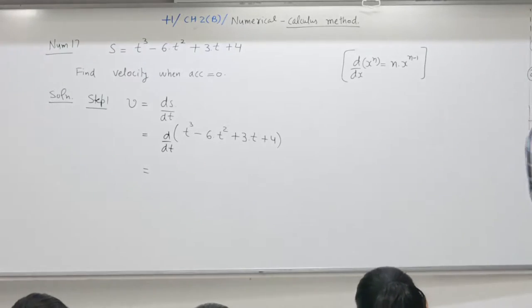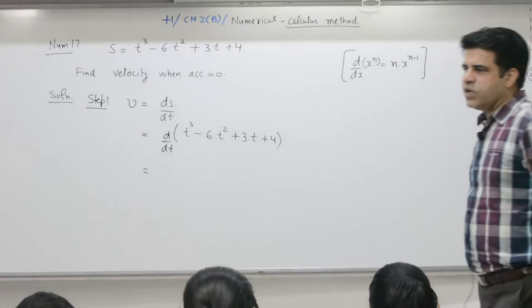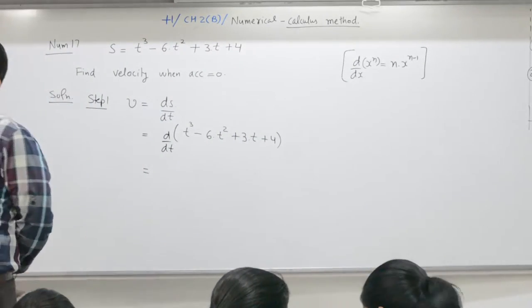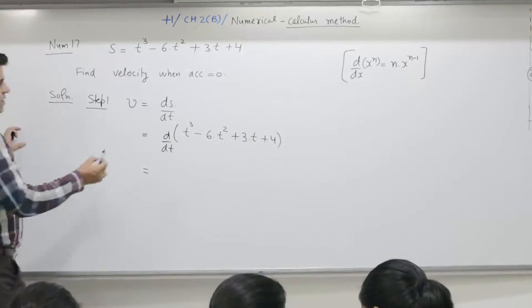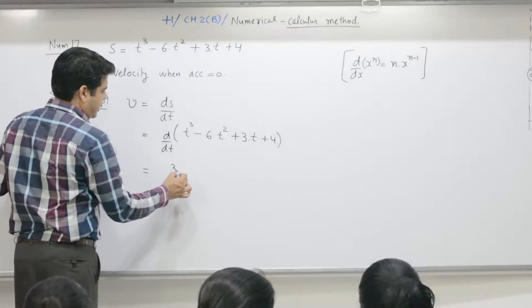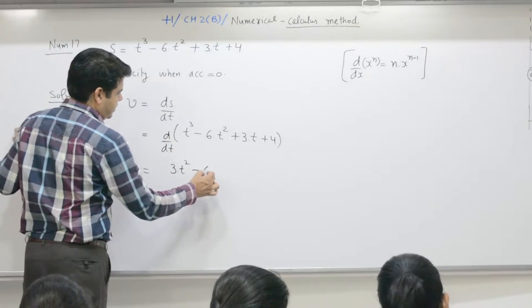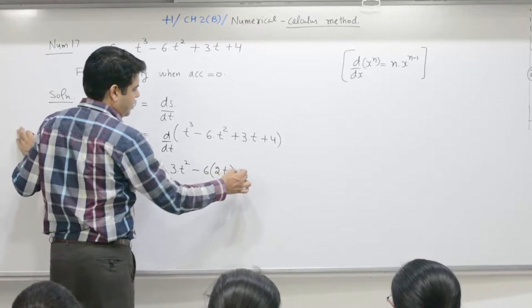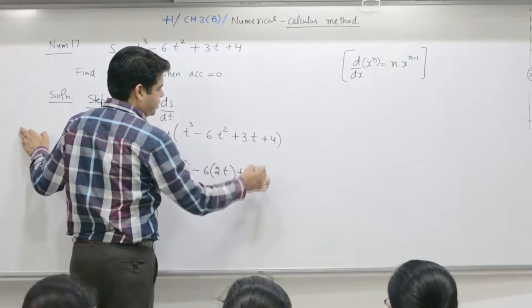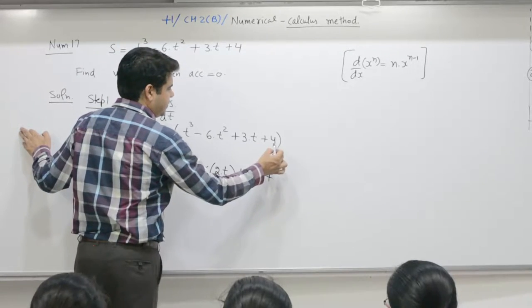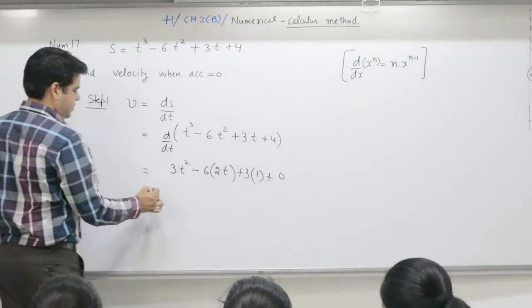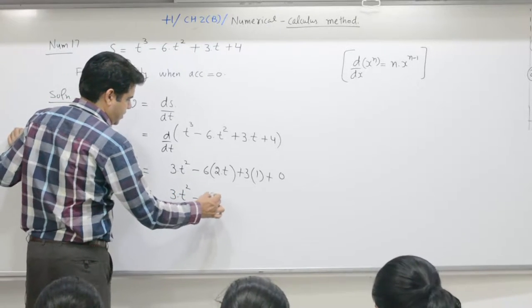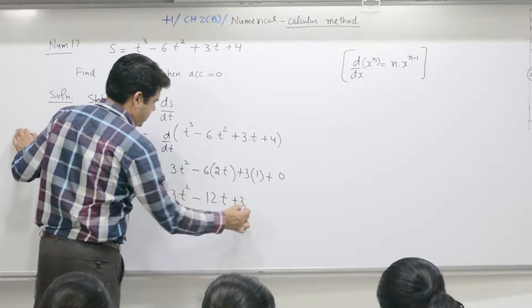Nothing to worry about or having fear of mathematics. Differentiating: t³ gives 3t², minus 6 times differentiation of t² gives 2t, plus 3 times differentiation of t gives 1, and the constant vanishes. So v = 3t² - 12t + 3.